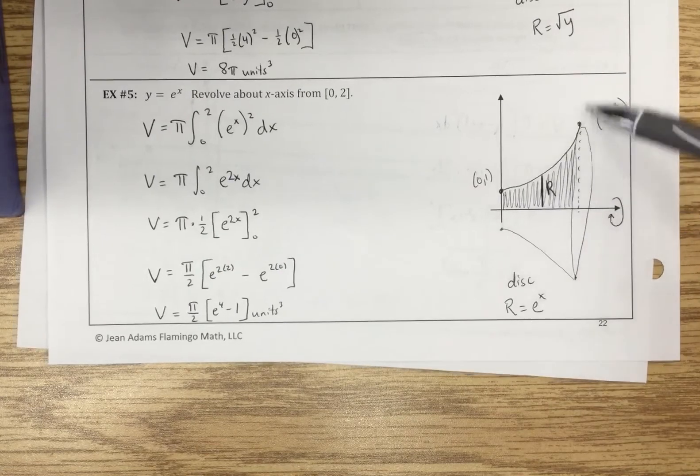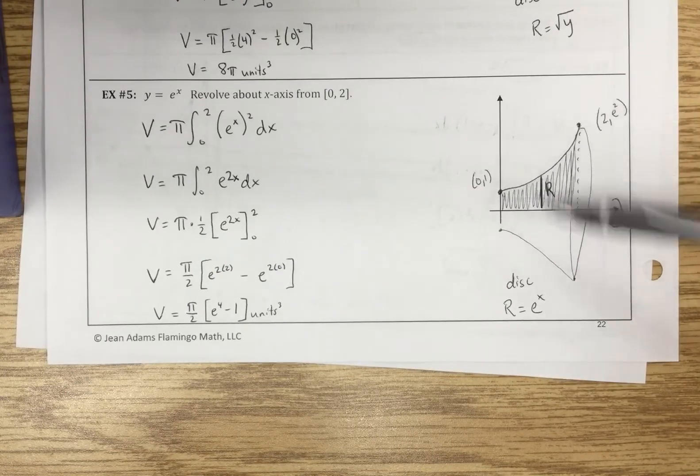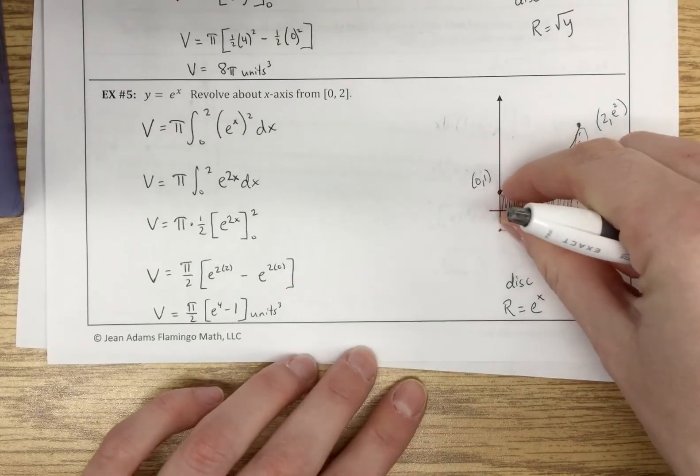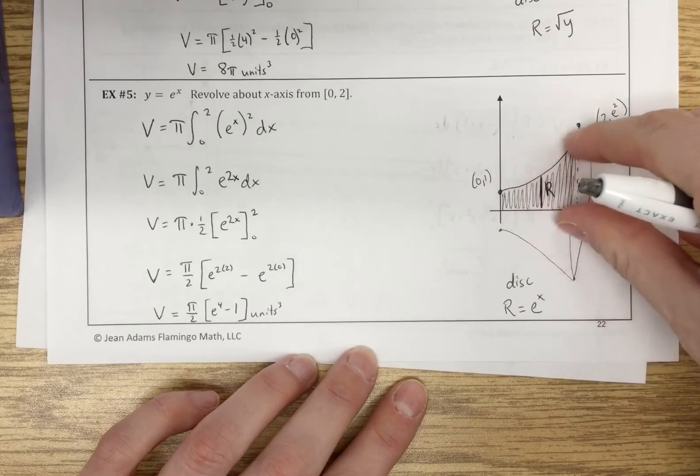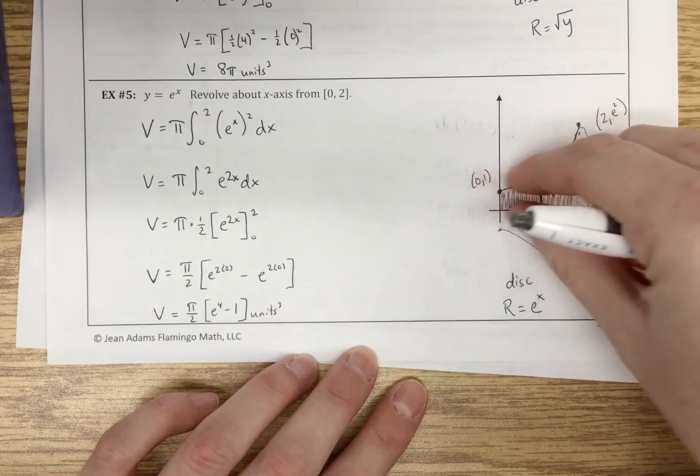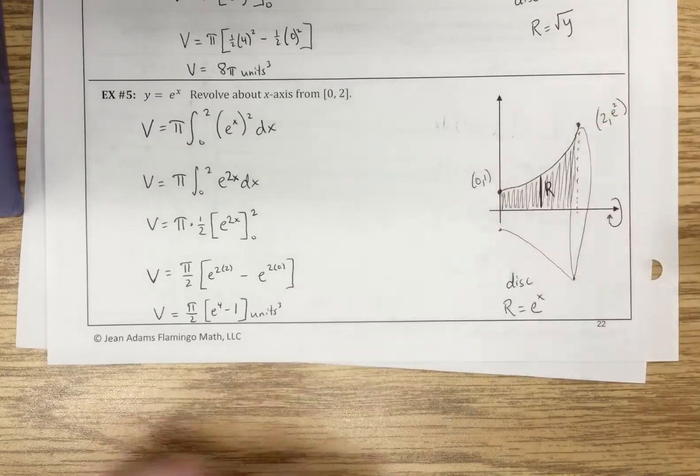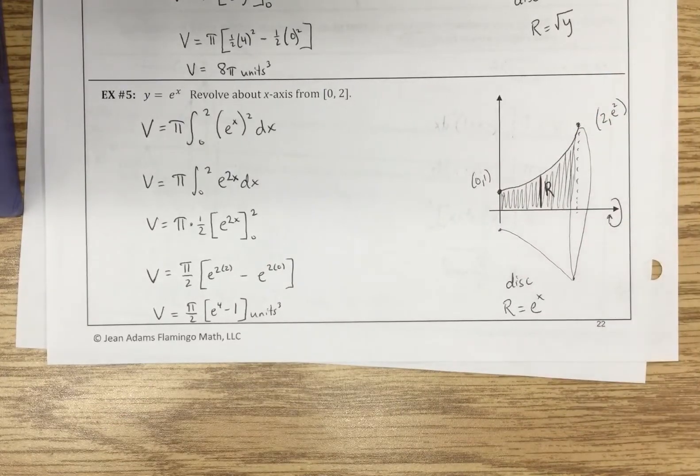I just know that it tends to have this sort of shape, so I did that. And again, our radius is changing as we go up the curve, so then I need to take that into consideration. It's following the curve. So my radius is e to the x.